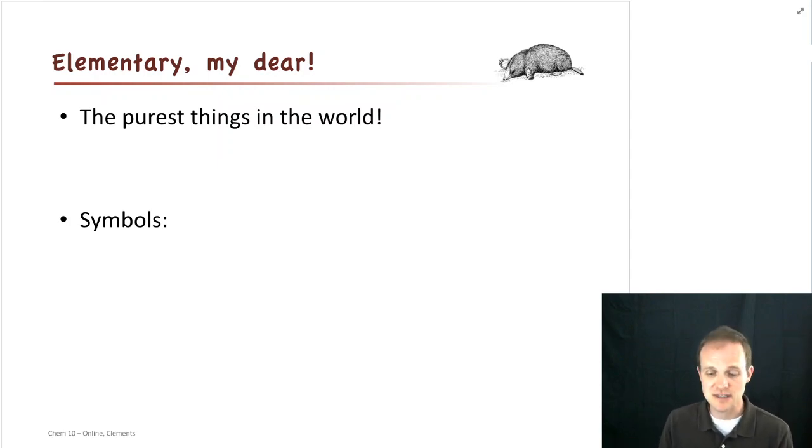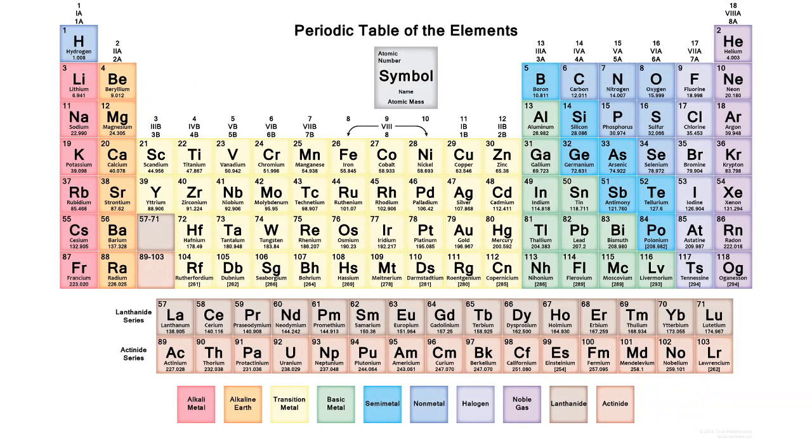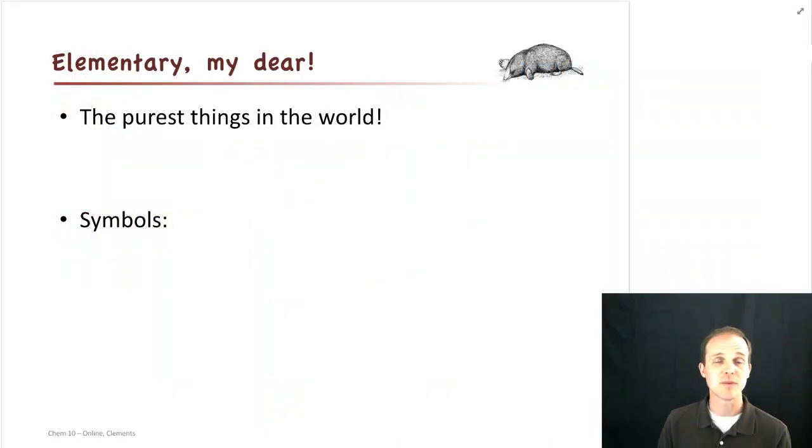And what they are is really the purest things in the world. If you take a look at our periodic table there, you can see there's all the different elements that there are that we know of in the universe, actually. 118 of them that we've discovered. Some of them we discovered. Some of them nature makes all by themselves. But there they are. And so what we're going to talk about is what are those made of? How do we know where we have atoms, elements, things like that? So that's what the elements are. They're the purest things in the world. They're the smallest building block of nature.